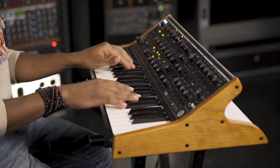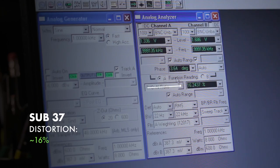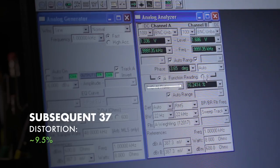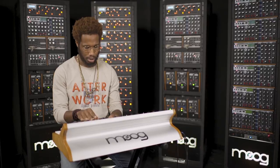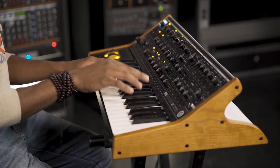If we go over to the audio precision analyzer, the Sub-37 Tribute Edition has a distortion of around 16% and the Subsequent 37 has a distortion of around 9.5%. The result of this change on the Subsequent 37 is that you have a wider vocabulary of clean sounds.